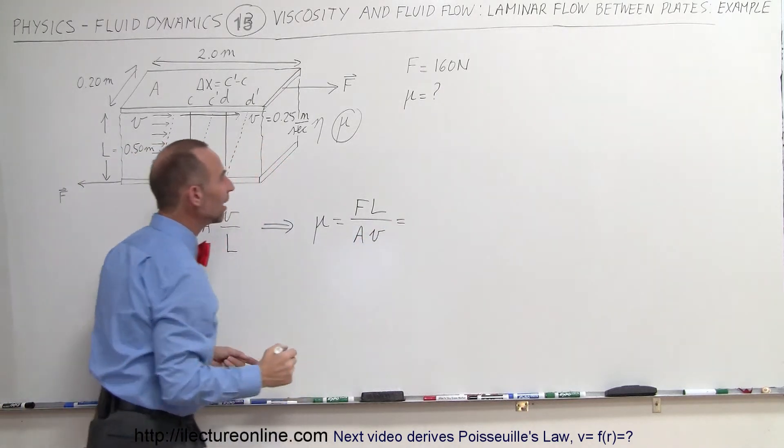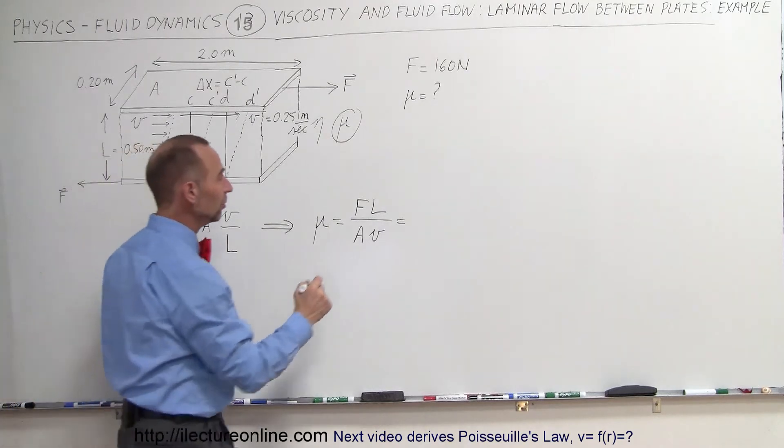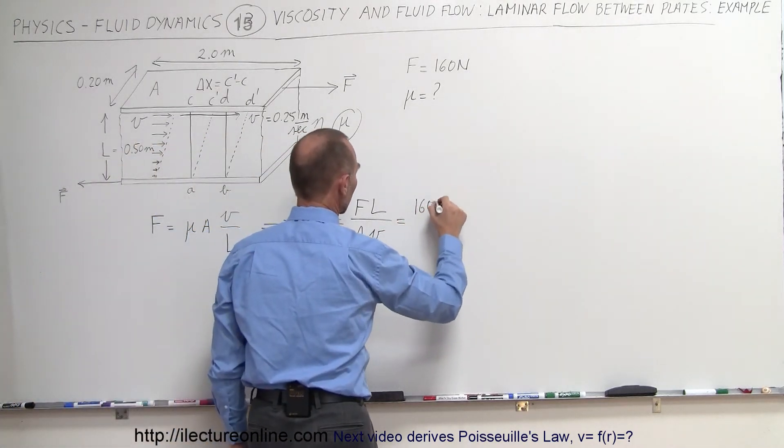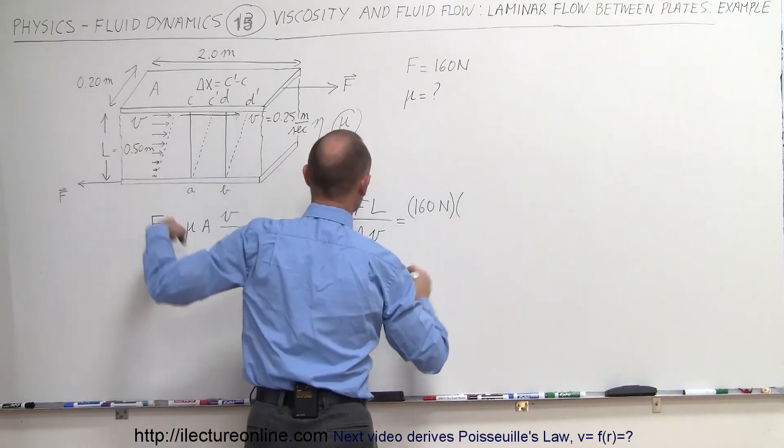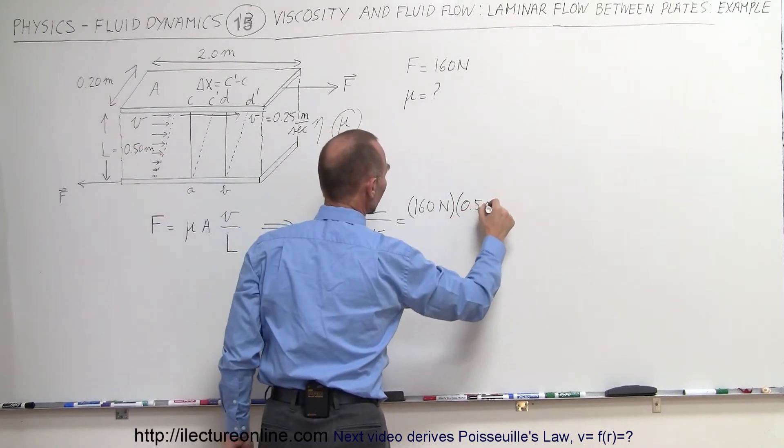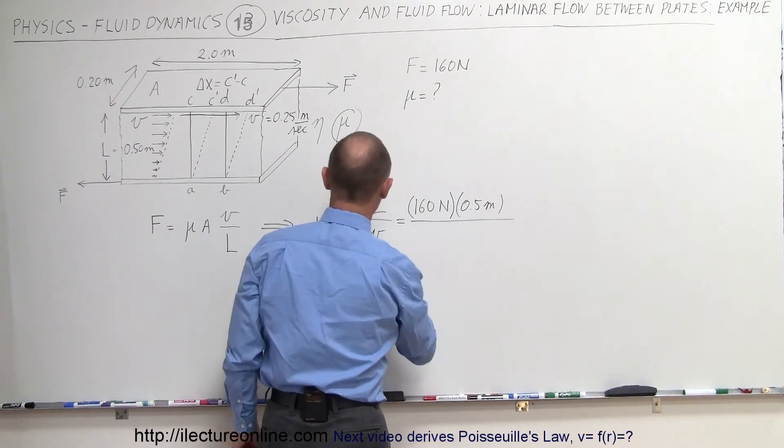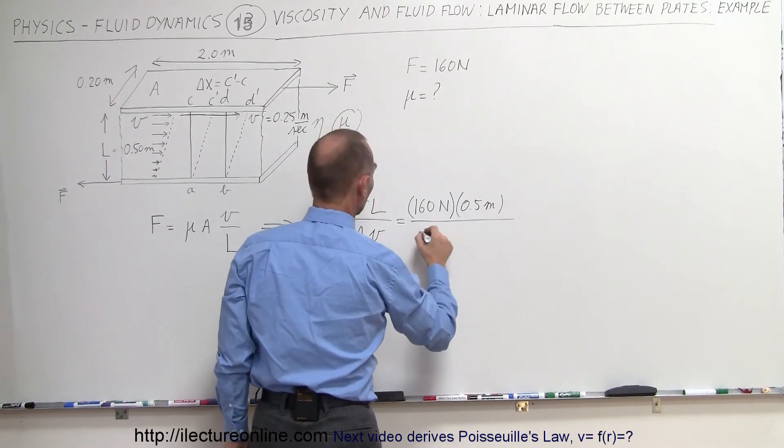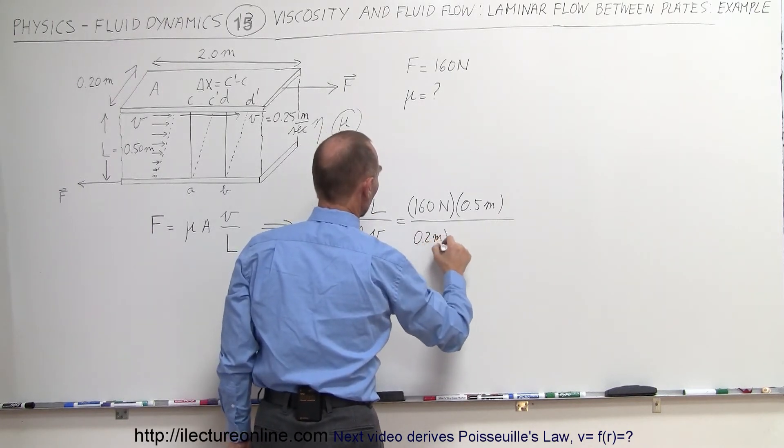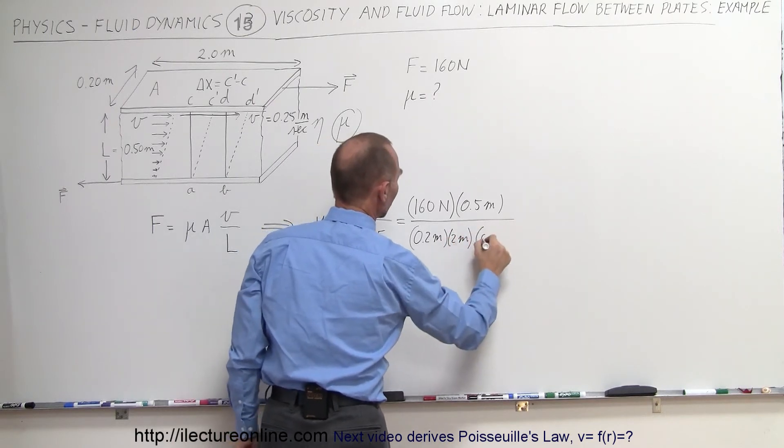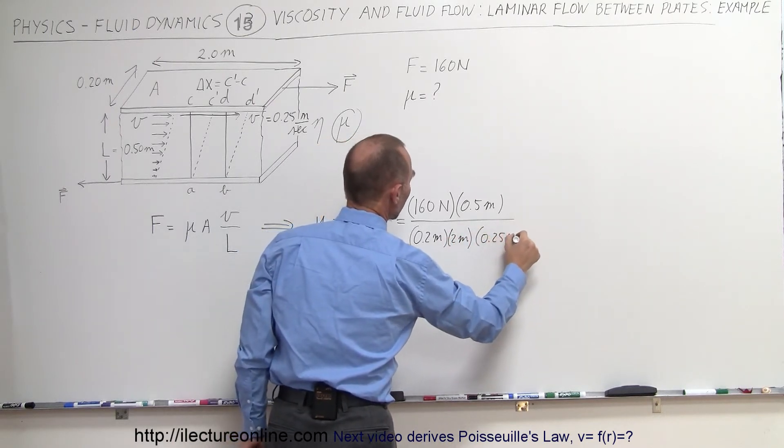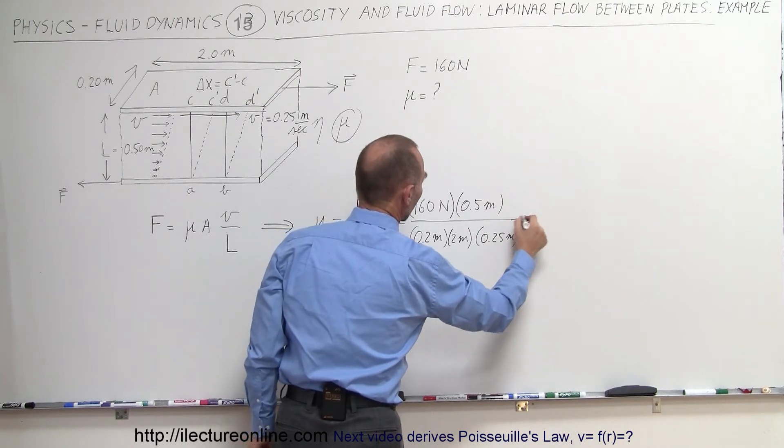So in this case, the force would be 160 Newtons times the height, 0.5 meters, divided by the area, which would be 0.2 meters times 2 meters, and the velocity would be 0.25 meters per second.